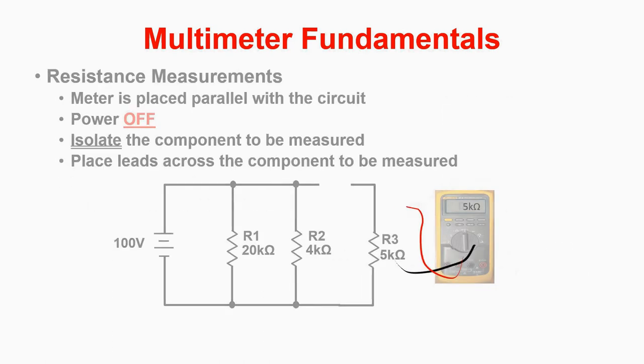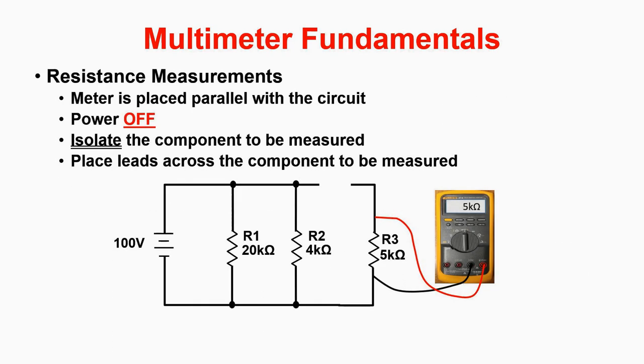The third and final measurement we learned about was a resistance measurement. To perform this measurement, it is like the voltage measurement, but we must make sure that the circuit is off. Our steps to perform this measurement are power off, isolate the component to be measured, and then place the leads across the component to be measured.